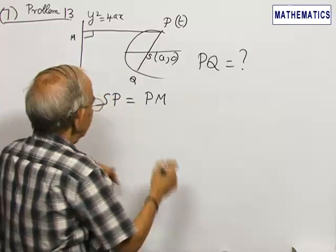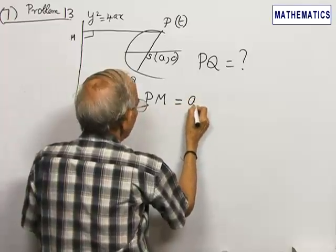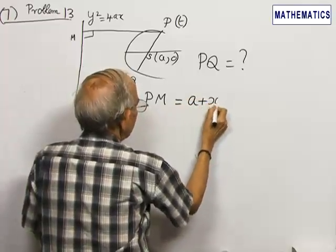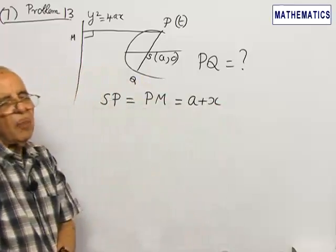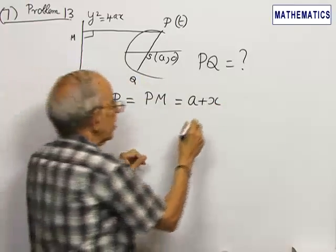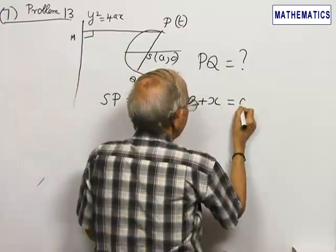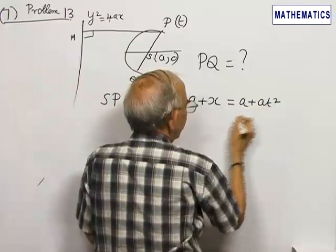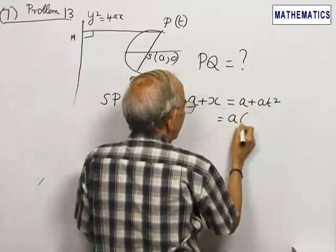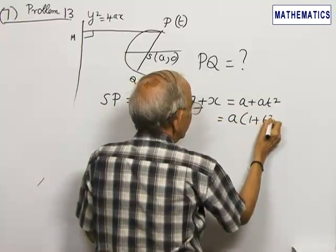And this is equal to a plus x, where x is the x coordinate of the point P. That is a plus a t squared, which equals a into 1 plus t squared.